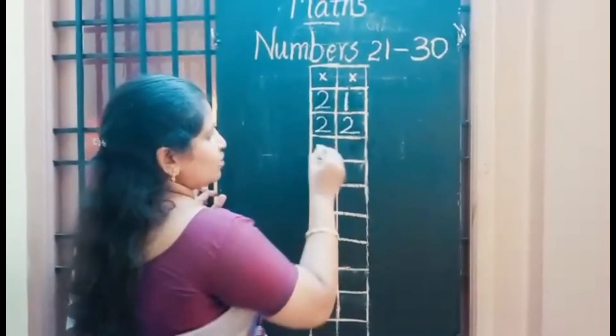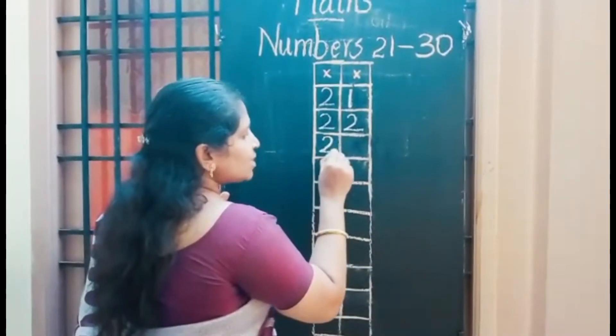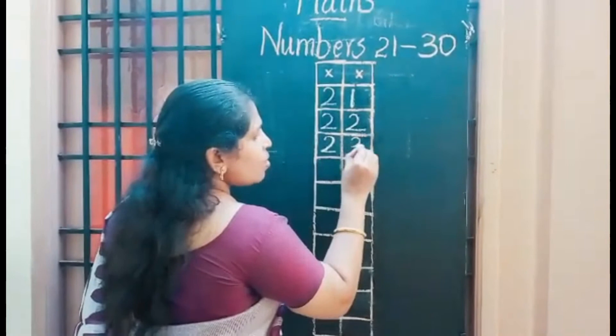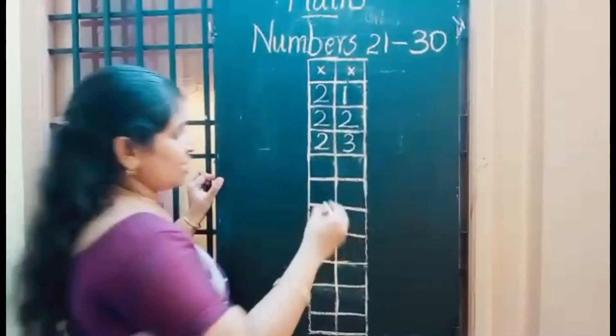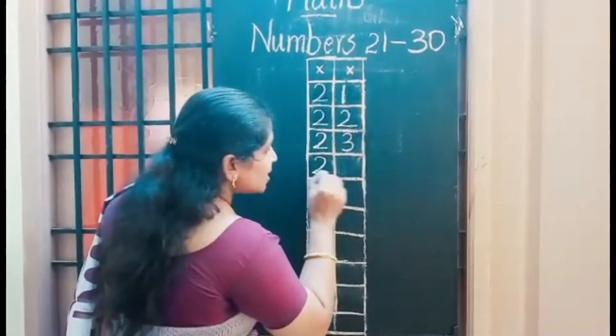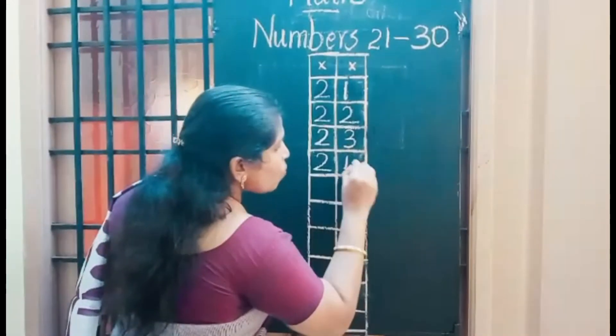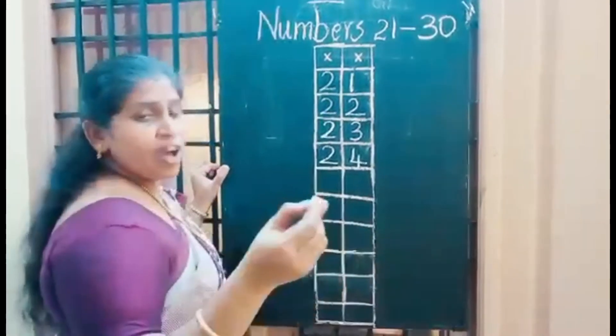2 3, 23. 2 in the 10th place, 3 in the 1's place. 2 4, 24. 2 in the 10th place, 4 in the 1's place.